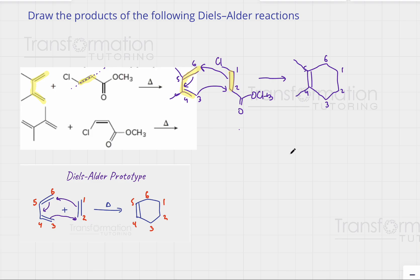Carbon number one has a chlorine — I have to show it. Carbon number two has this ester group — I'll show it as well. Carbon number four has a methyl group, and carbon number five has a methyl group. If you look at carbons three and six, they didn't have anything attached. So we've taken care of all the other atoms for our product.